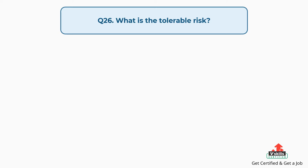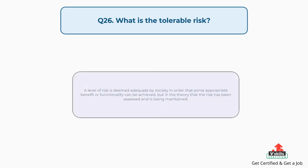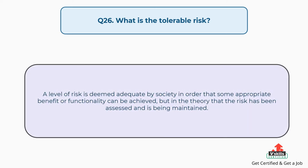Question number twenty-six: what is the tolerable risk? A level of risk is deemed adequate by society in order that some appropriate benefit or functionality can be achieved, but on the theory that the risk has been assessed and is being maintained.